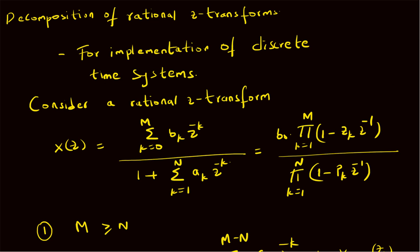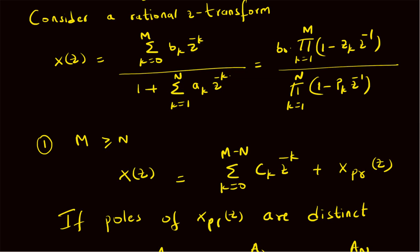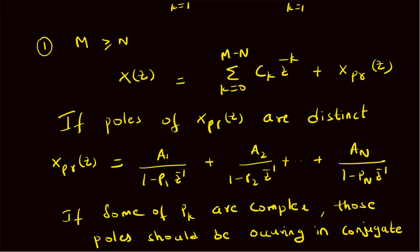To summarize: we looked at the decomposition of a rational z-transform X(z) with numerator summation k equals zero to M of b_k z to the power minus k, and denominator one plus summation k equals one to N of a_k z to the power minus k, or in factored form in terms of zeros and poles. If M ≥ N, X(z) is written as a sum of two parts: the integer component summation k equals zero to M minus N of c_k z to the power minus k, plus the proper fraction X_pr(z) corresponding to distinct real-valued poles.